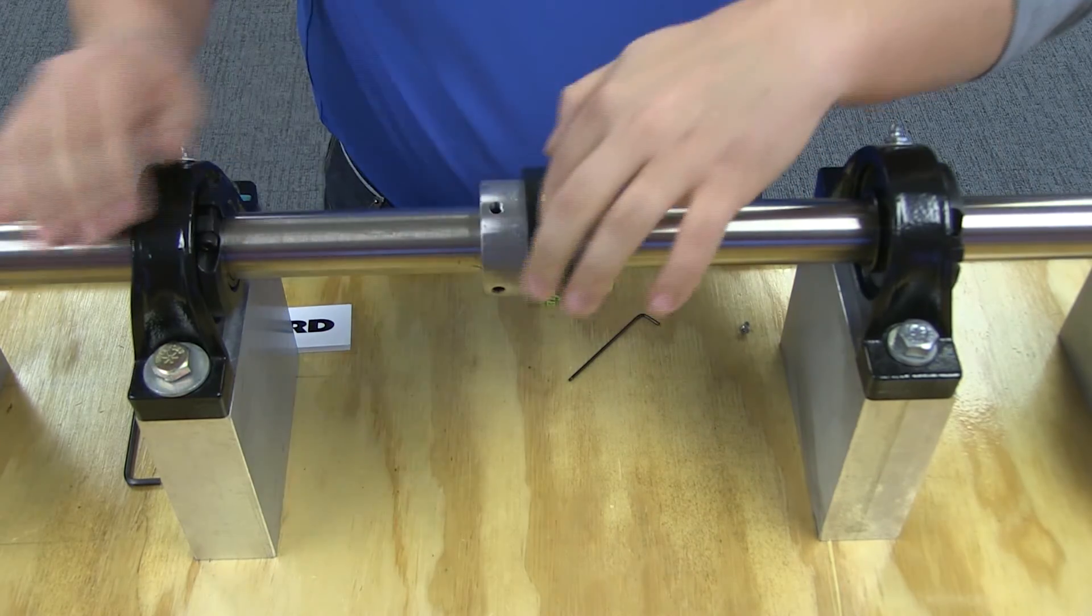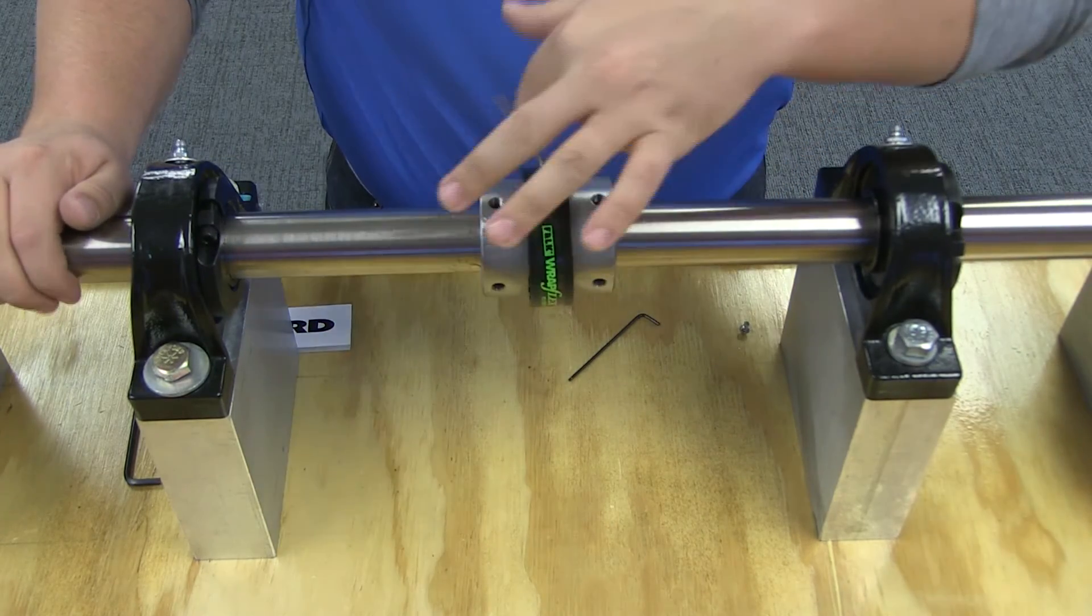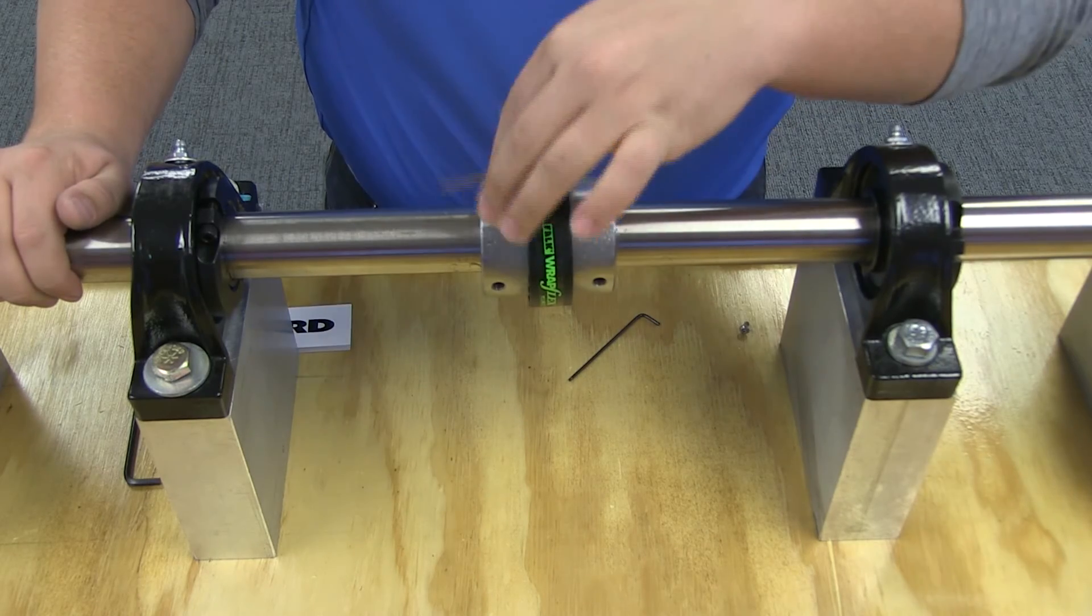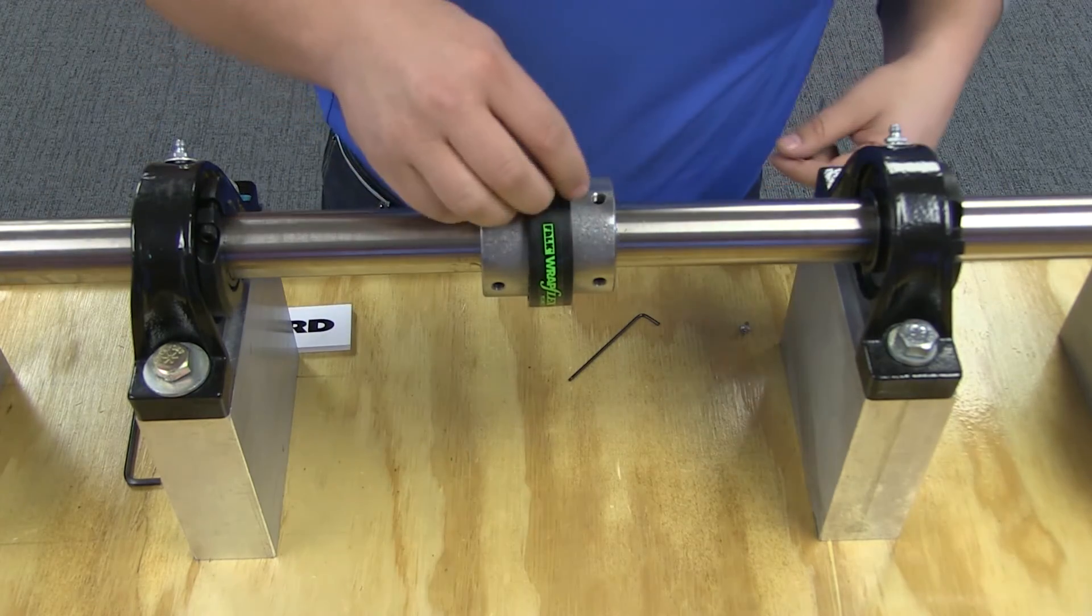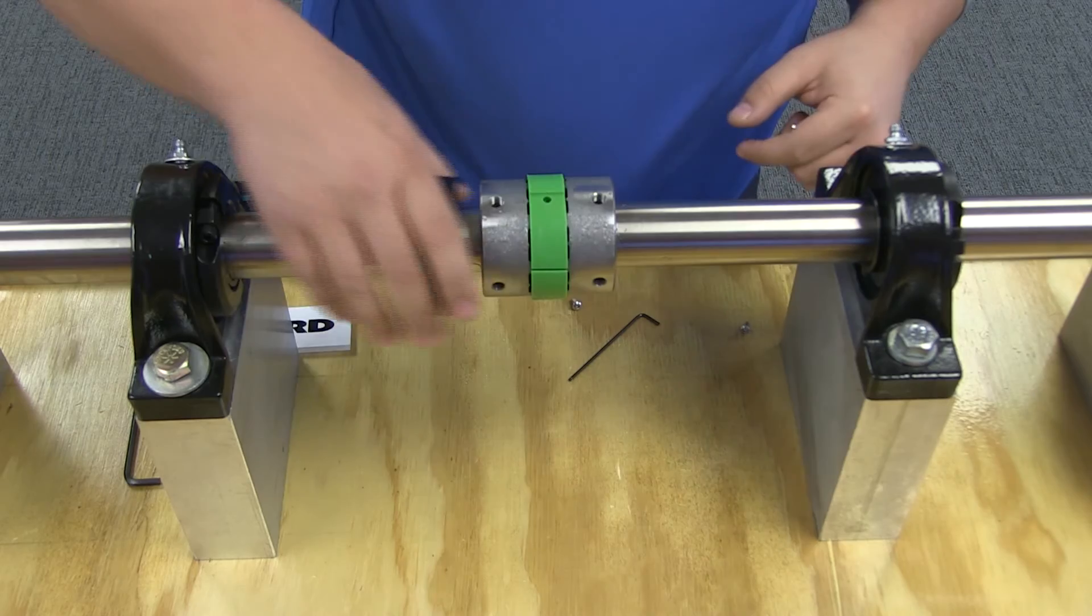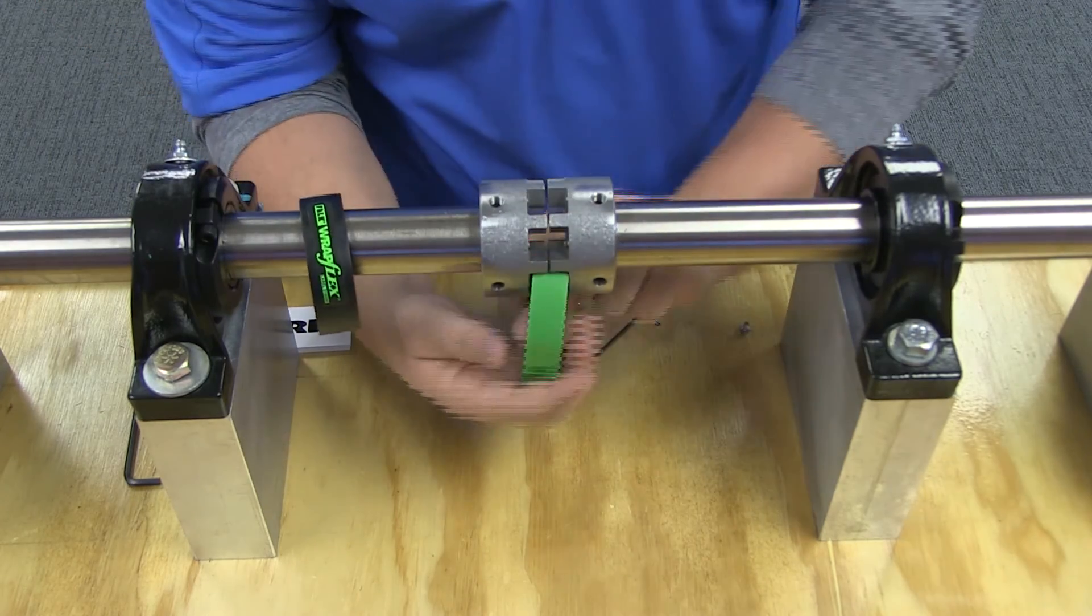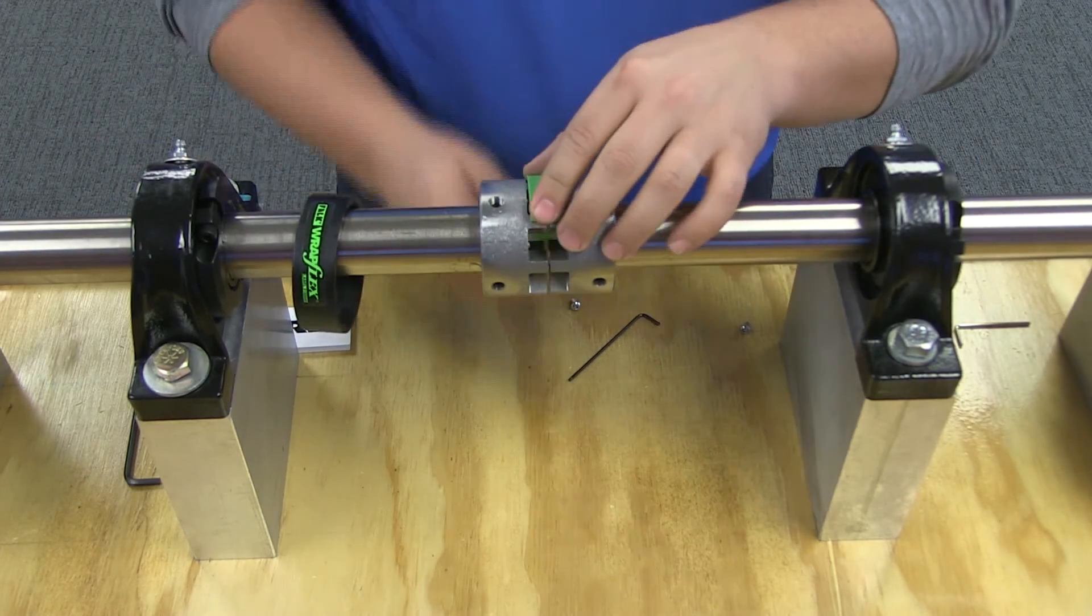Like most Rexnord couplings, the RAVFLEX coupling can be replaced in place. To replace the wearing component of the coupling, simply unscrew the tightening screws, remove the retaining cover, unwrap the element, and replace with a new element.